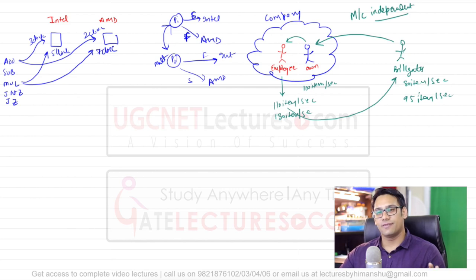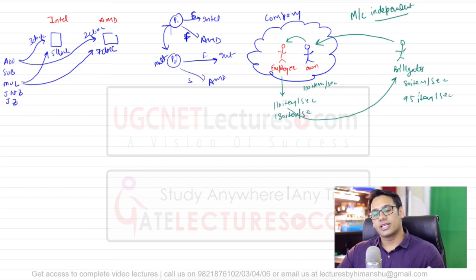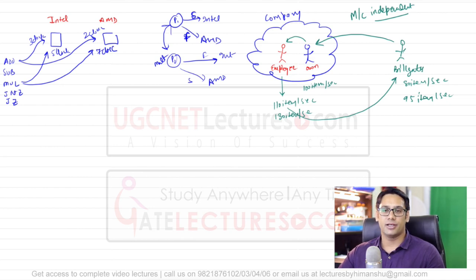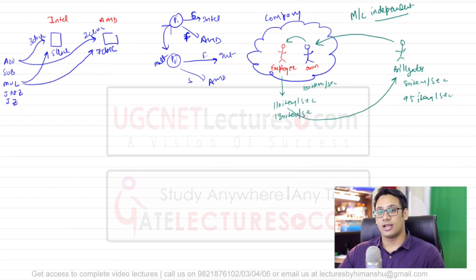In the last video we saw a very simple example showing that we cannot be dependent on the machine architecture. There is one more reason why you should not depend on the actual machine running time — there are still problems which cannot be solved in this lifetime.